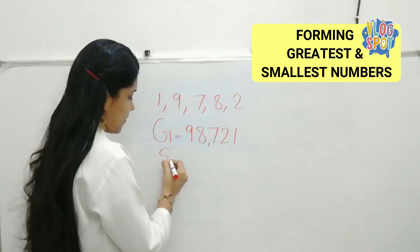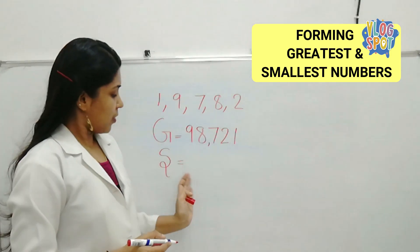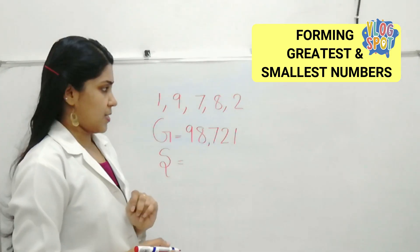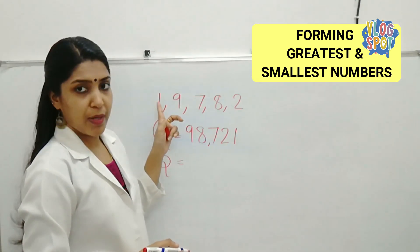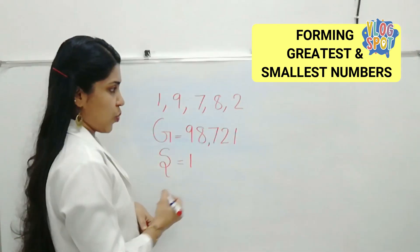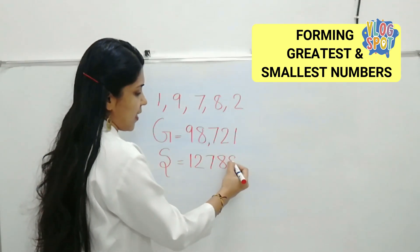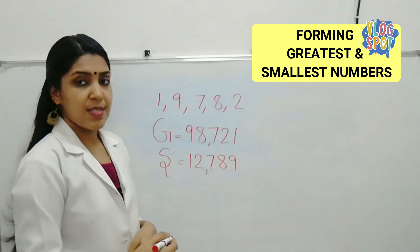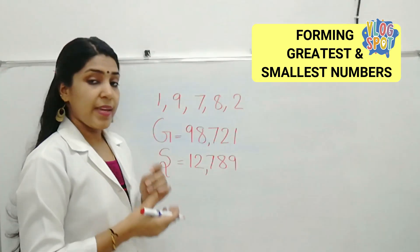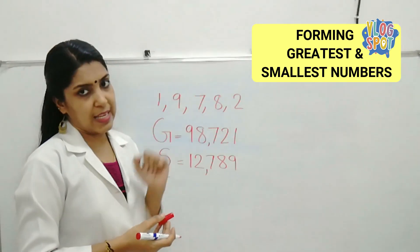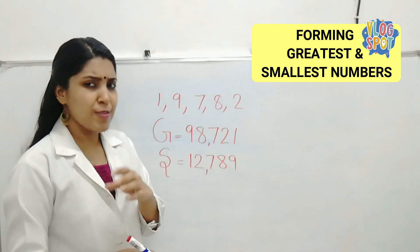Then what about the smallest? For forming the smallest digit, we have to write the smallest number first. Which is the smallest number here? Yes, it is 1. Then comes 2. Then 7. Then 8. Then 9. 12,789 is the smallest possible number we can form using the digits given. Is this easy? Yes, this is so easy.